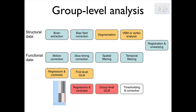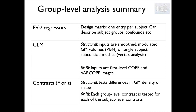The group level analysis step is common to structural and functional analysis, and in fact is common to other modalities, because the only difference is the input. We have our group level design matrix, that this time has one entry per subject instead of one entry per time point. Our EVs now describe the group composition or the variable that we want to use in our correlation analysis. We can also include confounds like age or sex that we want to control for. We then fit our GLM with the only difference across modalities being the input.